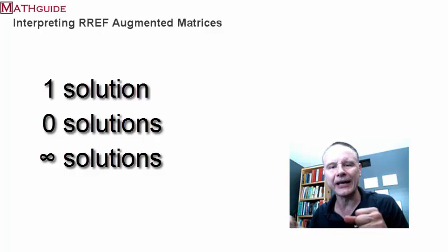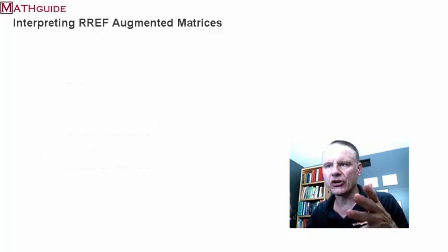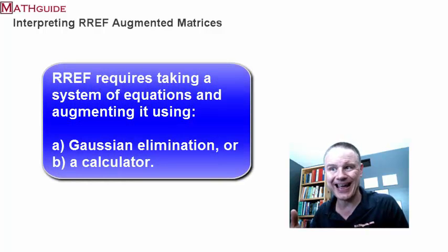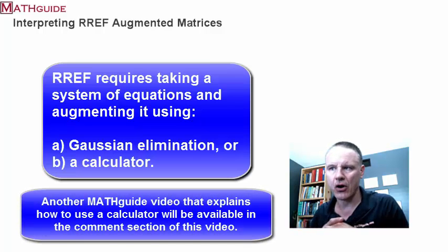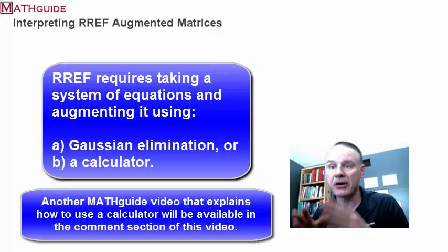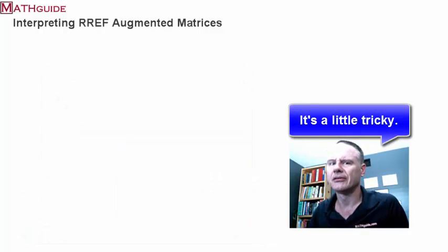Before we get into the nitty-gritty of all of that, there are some things you have to know. When using RREF, you either have to know how to do it by hand using the Gaussian method or have to know how to use a calculator to get those augmented matrices — either doing it by hand or by a calculator. But once you've got the augmented matrix, this video is going to show you how to interpret those, because it's a little tricky.